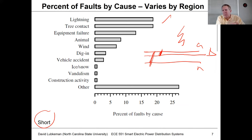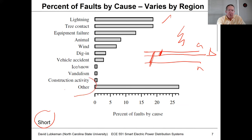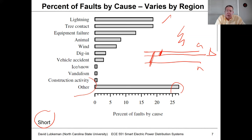Construction is another cause — workers using a backhoe nearby might dig into an underground cable and cause a fault. Interestingly, the largest category of fault causes is actually 'unknown.' A lot of times after a short circuit occurs, we go out into the field and never know exactly what caused it. This is a problem, because if we don't know what caused the fault, we're powerless to prevent it from happening again. You really want to know the cause so you can fix it and stop it from recurring.